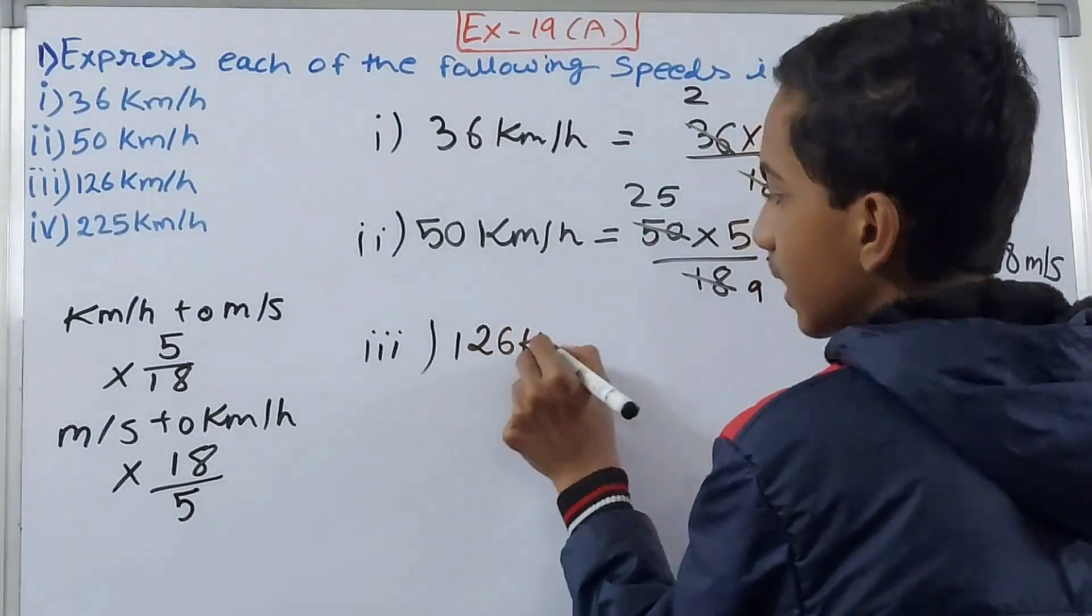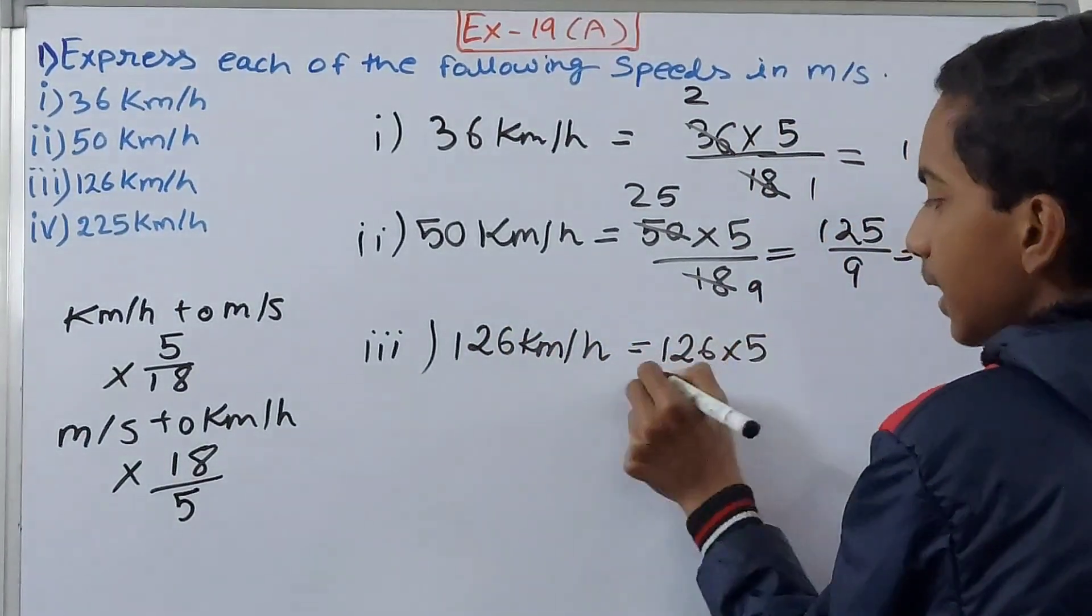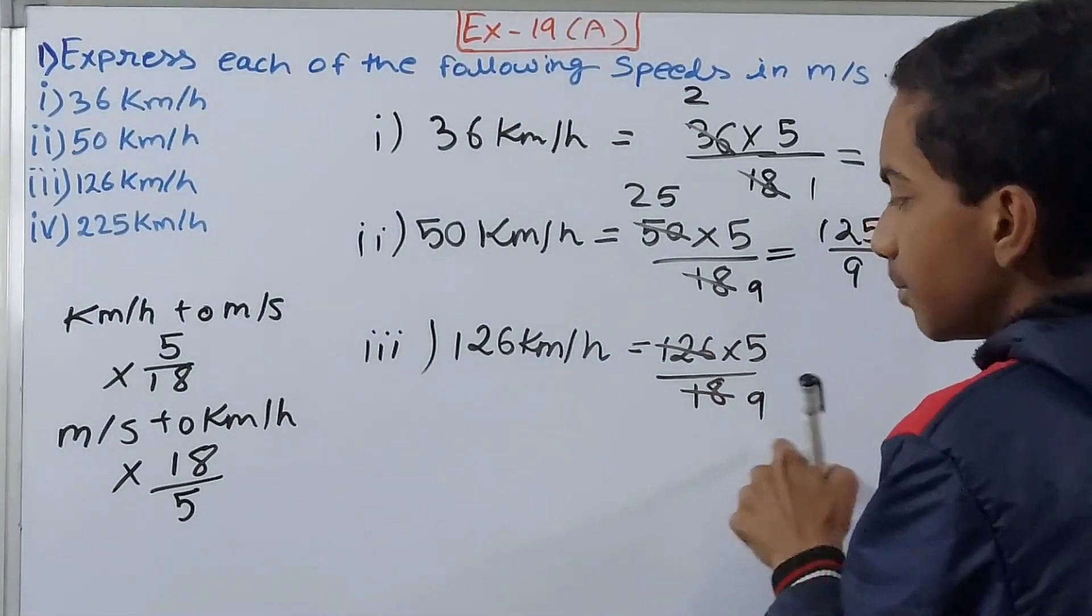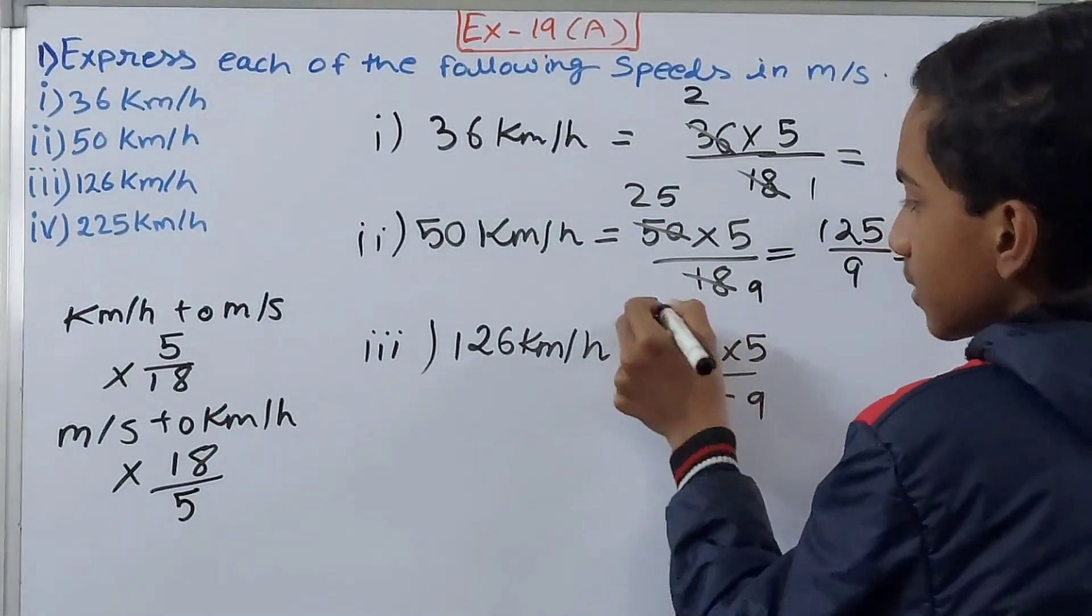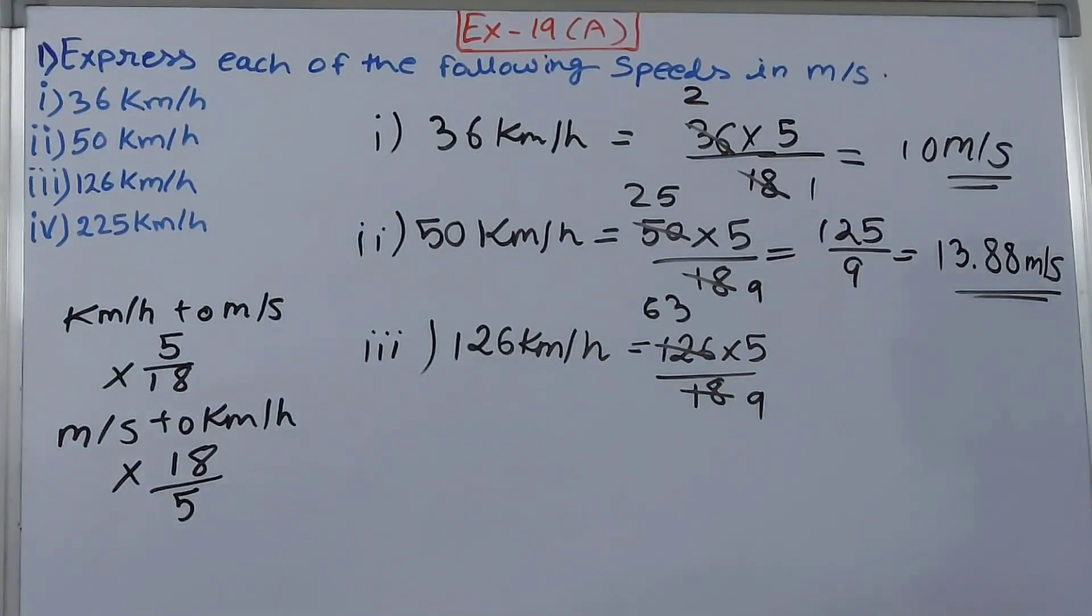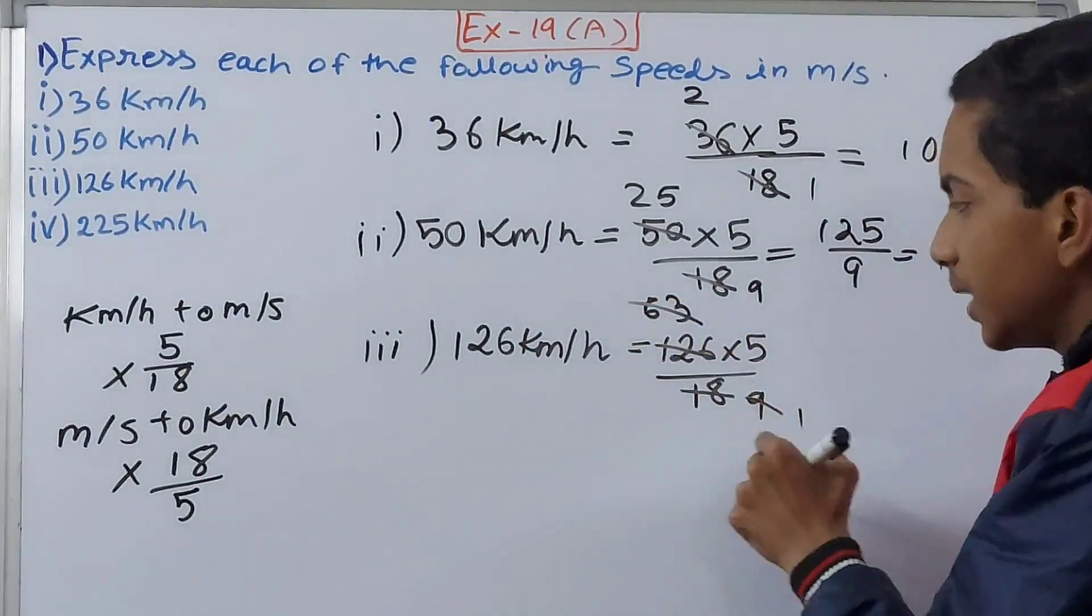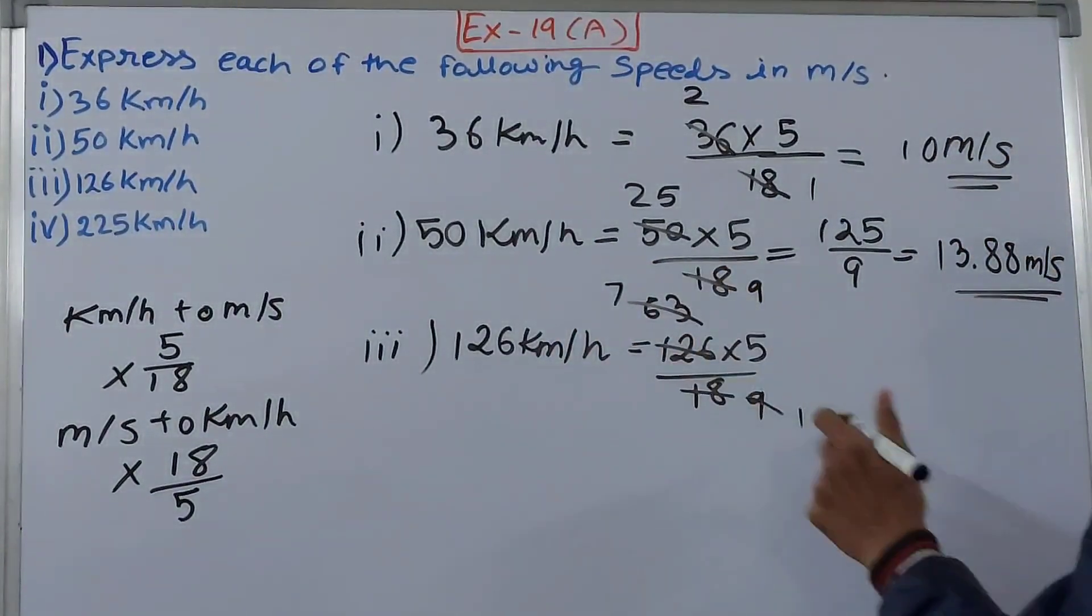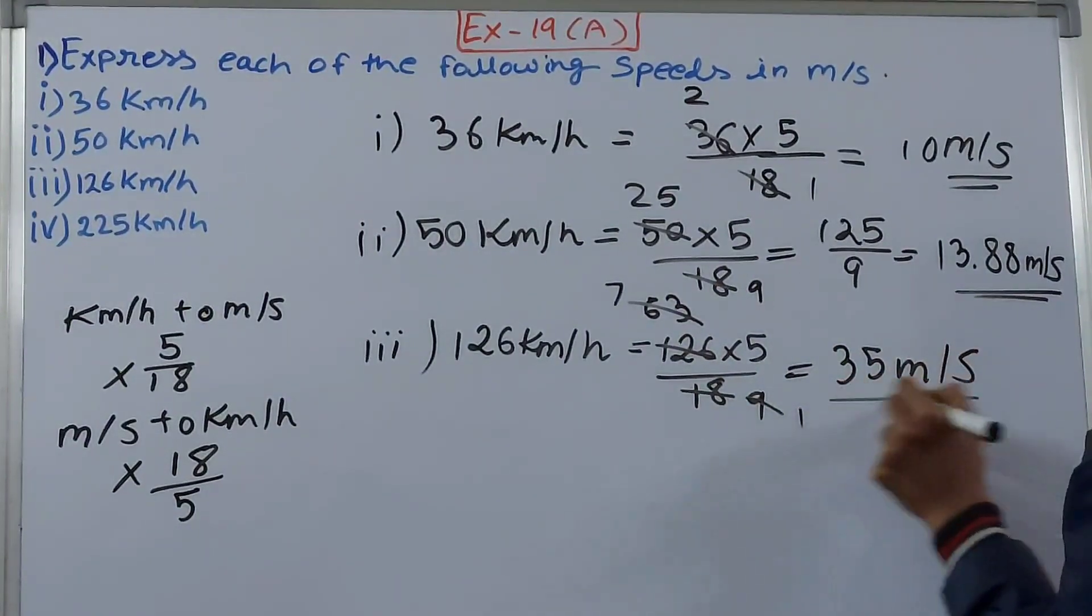In the third part, we've got 126 kilometers per hour. Again very simple, multiply 126 by 5 by 18. Cancel this, cancel by 2. 63 and 9 can be canceled directly, 63 goes 7 times by 9. Now 7 into 5 is 35, so 35 meter per second.